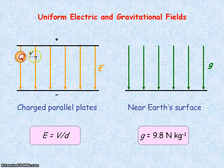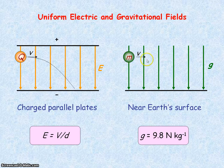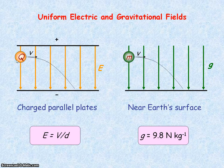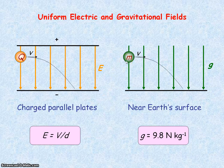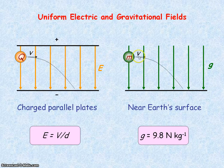For a charge moving perpendicular to an electric field, it will follow a parabolic path. This is similar to a mass projected horizontally from the Earth's surface — projected perpendicular to the gravitational field. The charge experiences an electric force acting vertically downwards, and the mass experiences a gravitational force (its weight) also acting vertically downwards. Perpendicular to the fields, there is no force acting on the objects, so they move with constant velocity.